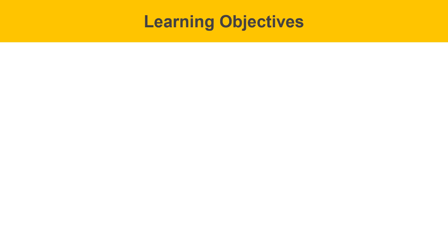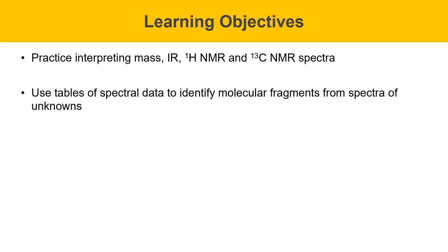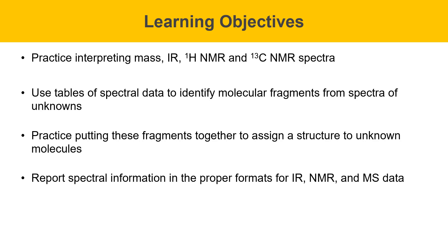Learning objectives for this experiment include developing practice interpreting mass spectra, IR spectra, proton NMR spectra, and carbon-13 spectra. You'll use tables of spectral data to identify molecular fragments from spectra of unknowns. You'll practice putting these fragments together to assign the structure of an unknown molecule. And you'll also learn to report spectral information in the proper format that we've asked you to include for infrared data, IR data, NMR data, and mass spectrometry data.